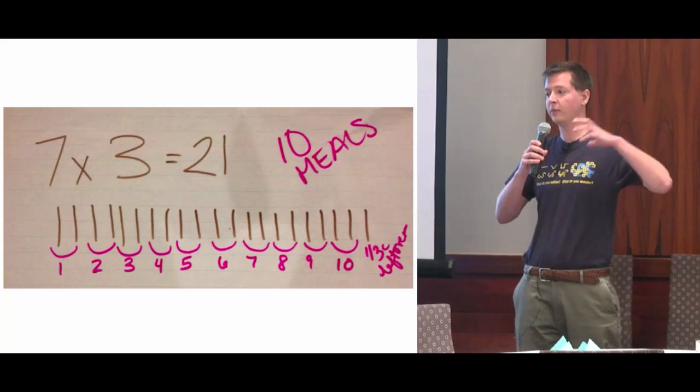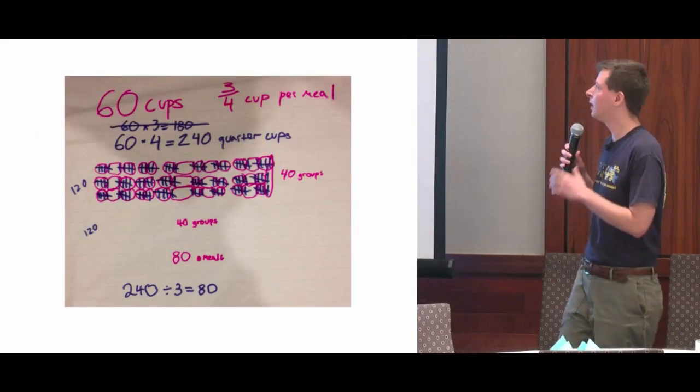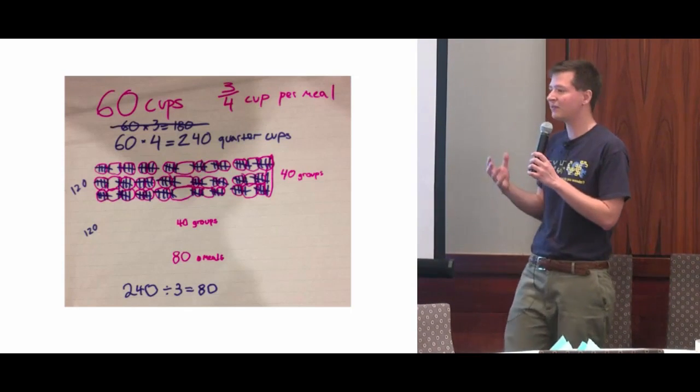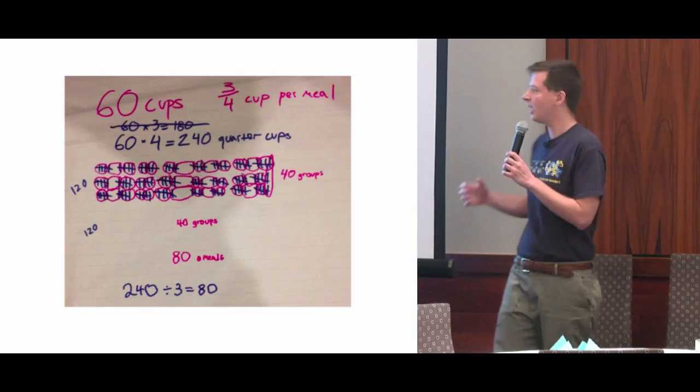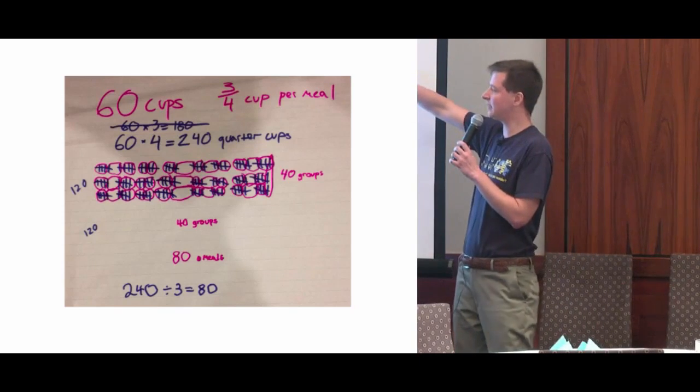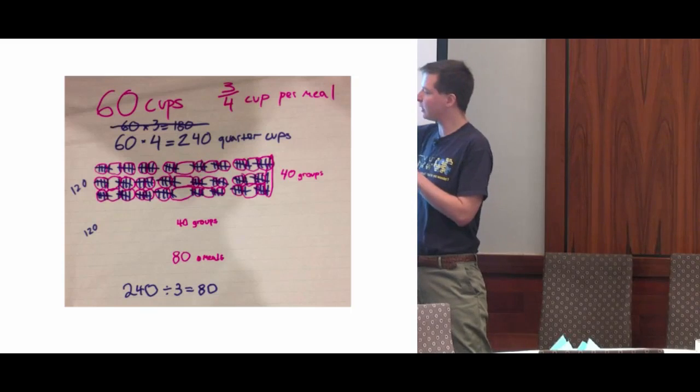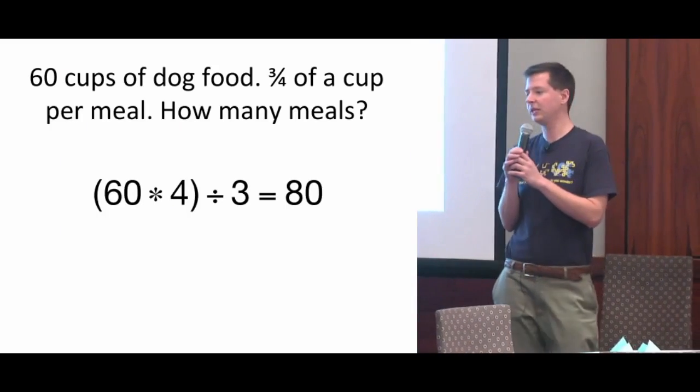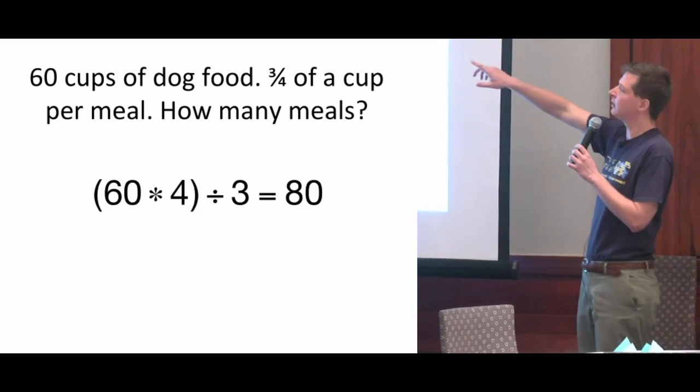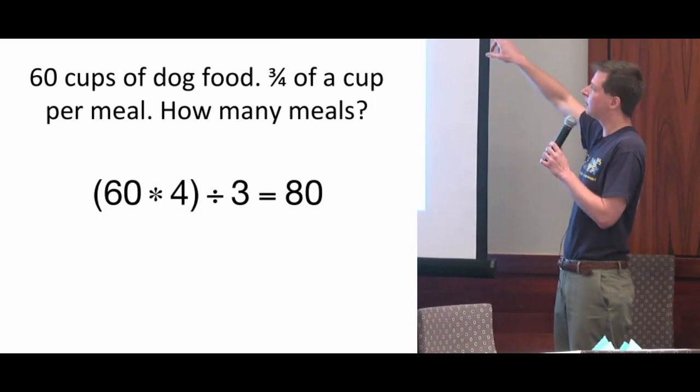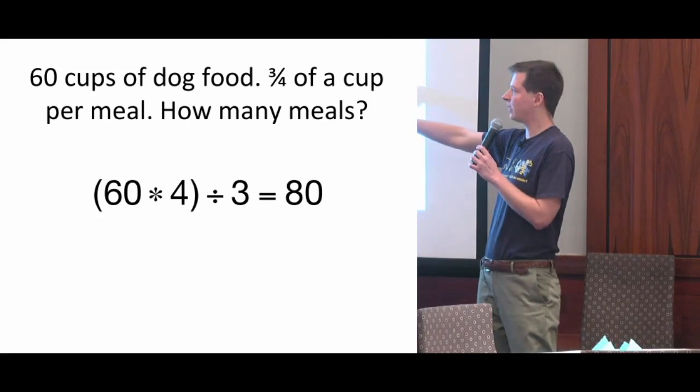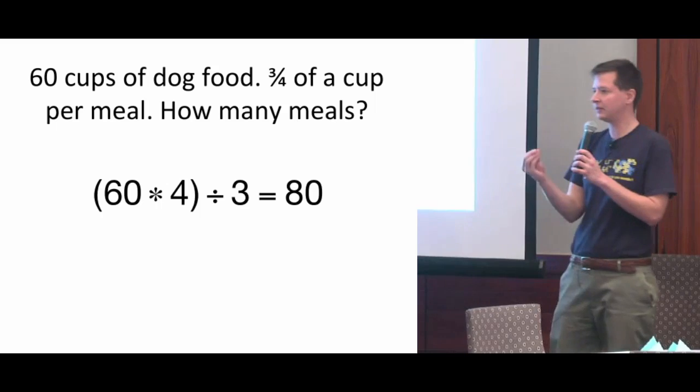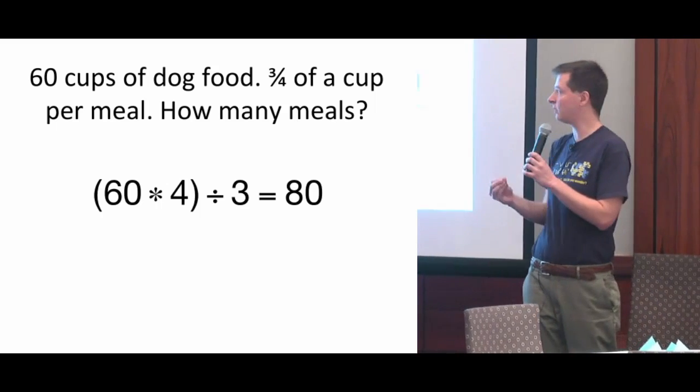Then I ask them to solve a problem with a lot of dog food. I say, okay, my puppy got bigger. We're giving him three quarters of a cup at each meal now, and we have 60 cups of dog food. When they encounter 60 cups, they start to think maybe I'm going to divide the number of quarter cups into groups of three to make three meals. They multiply 60 by four to find how many quarter cups there are and group those into sets of three for the meals. They're dividing by three.